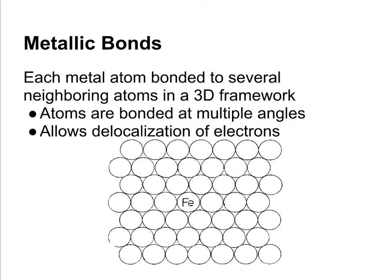We've only got a 2D representation here, but imagine several stacks of these iron atoms. In a metallic bond, atoms are bonded at multiple angles, and this allows the delocalization of electrons.